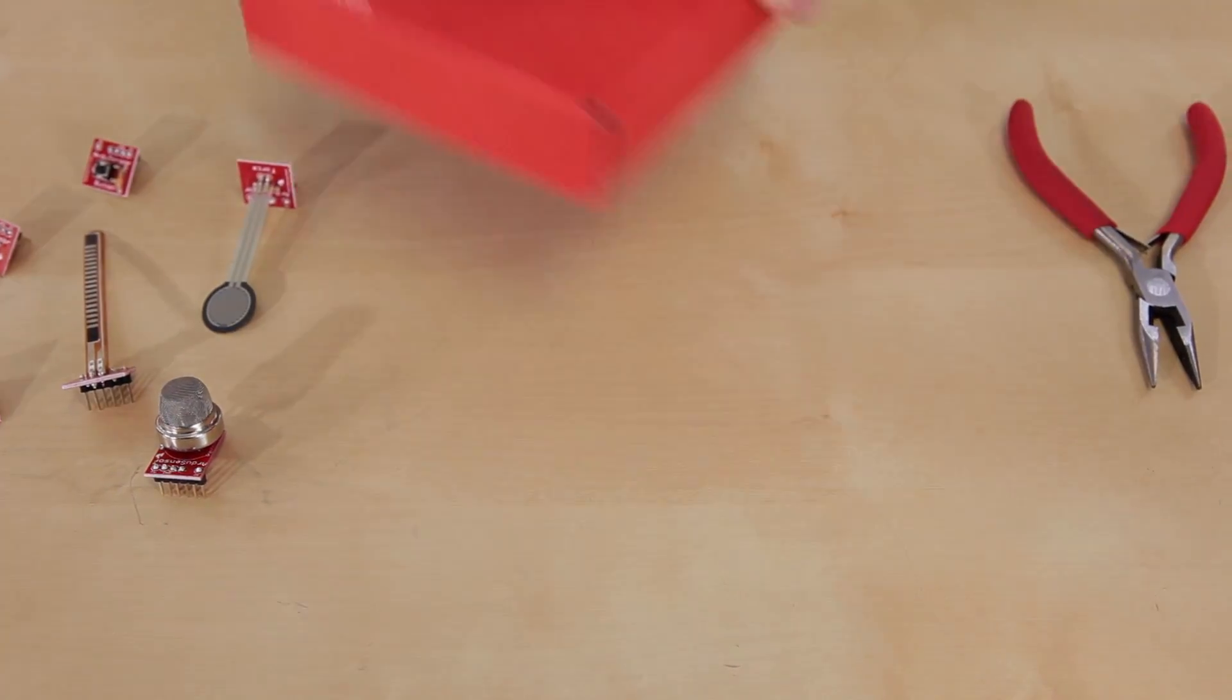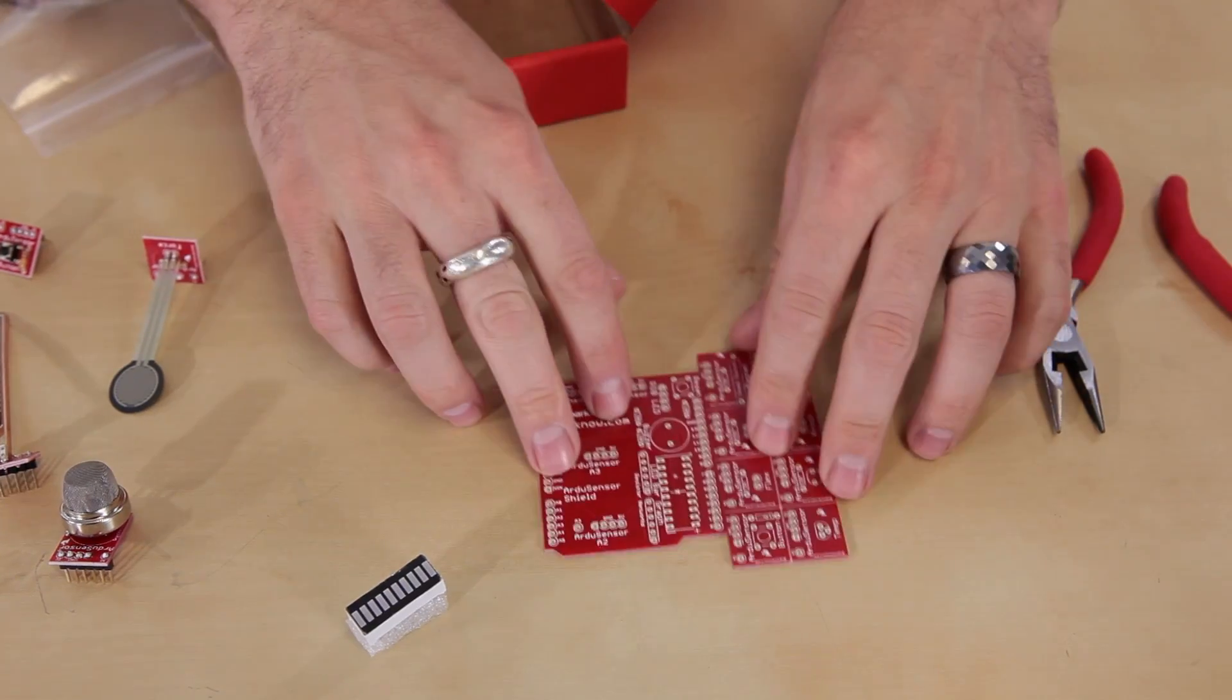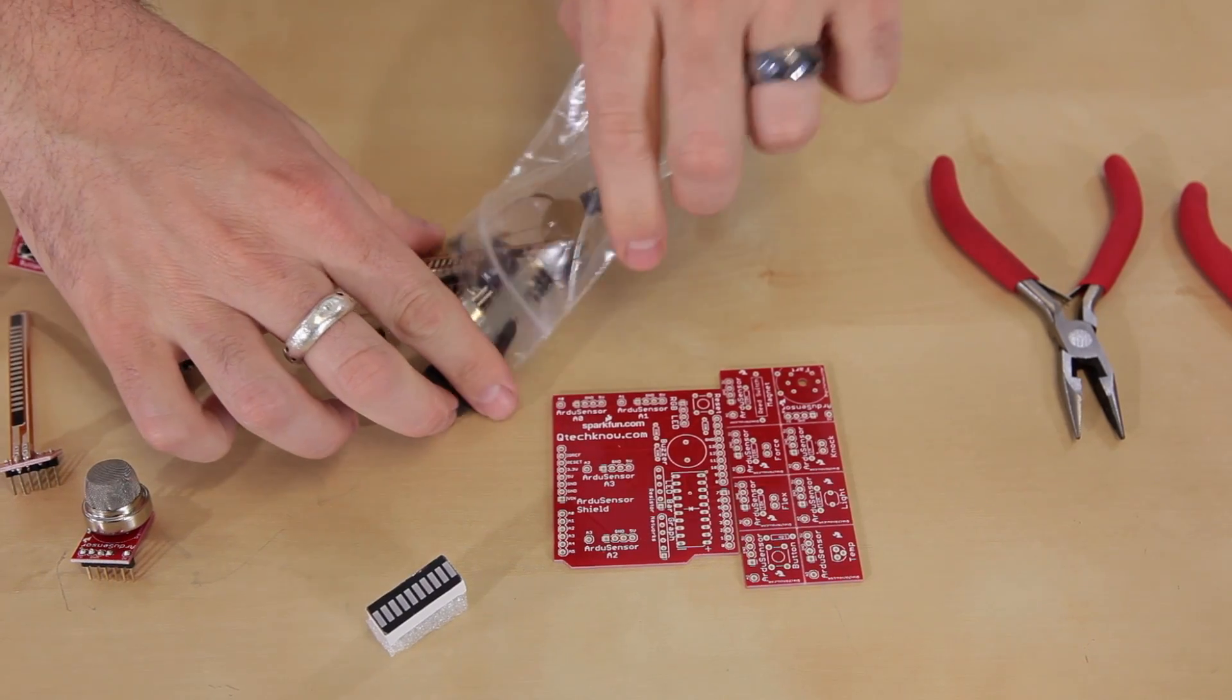The first thing we need to do is open up the kit. We've got the bar graph, the two PCBs, and then all the components.